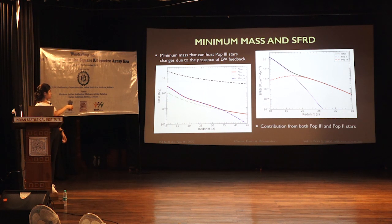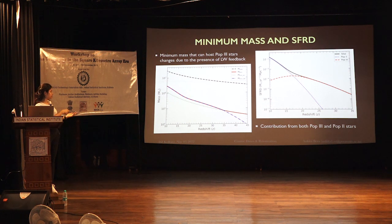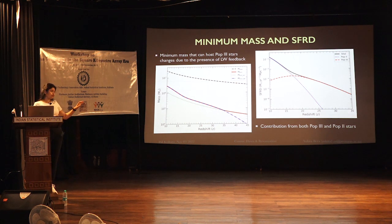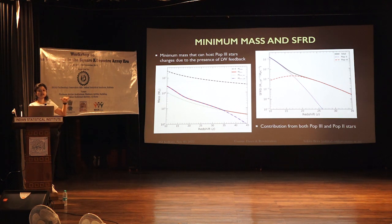With this, we get the total star formation — the Population 3 and Population 2 star formation rates calculated from our model. We see that around redshift 17 there is a coexistence of Population 3 and Population 2 stars. After that, because of the Lyman-Werner photons, the Population 3 star formation dilutes and Pop 2 stars start to dominate at low redshift.